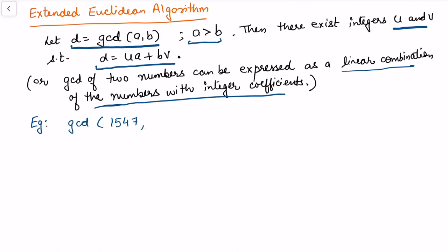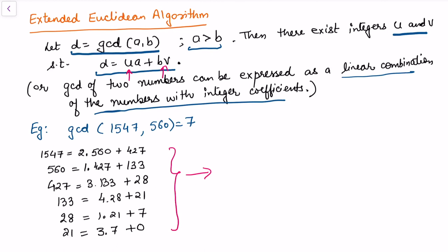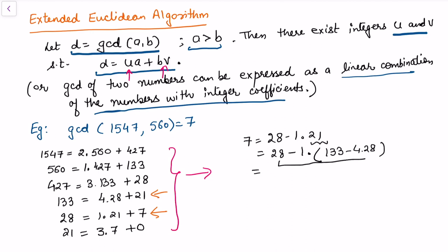From the previous example, GCD(1547, 560) = 7. Now I want to trace back the steps to find u and v. We pick up the last non-zero remainder step: 7 = 28 - 1×21. Now replace 21 using the previous step where 21 = 133 - 4×28. Substituting and combining the 28 terms: 1×28 and -(-4×28) gives 5×28 - 1×133... wait, combining: 7 = 5×28 - 1×133.